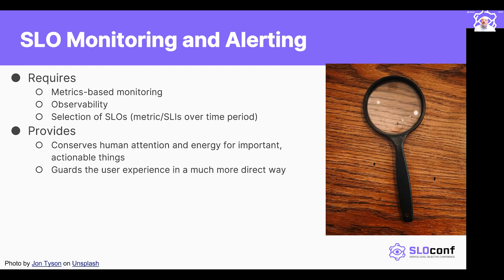As an introduction to SLO monitoring and alerting, this requires a certain number of things in order to enact. The first thing to say is that it requires metrics-based monitoring — this isn't really something you can do with simple up-down measures, at least not easily. It also very strongly helps, if not actively requires, that you can do observability of some kind. You might be gathering the metrics, but you need some way to examine them, graph them, compare them with each other, plot them beside each other, and so on.